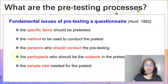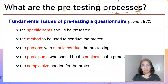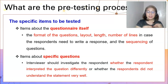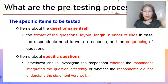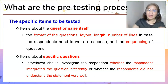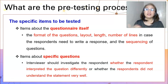There are five fundamental issues in pre-testing a questionnaire. Number one relates to the specific items to be pre-tested; second, to the method to be used in conducting the pre-test; third, the persons who should conduct the pre-testing; fourth, the participants who should be subjects in the pre-test; and fifth, the sample size needed for the pre-test. Regarding specific items to be tested, there are two approaches: one is about the questionnaire itself — investigating the layout, length, form, and sequencing of questions — and the other is specific questions, where you are more interested in whether respondents understand your question items the way you intend.